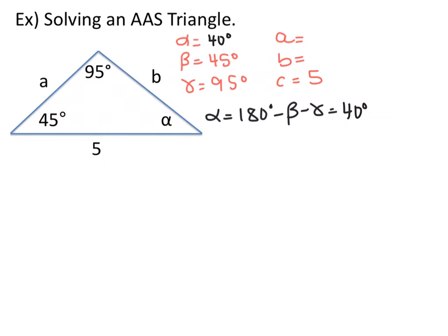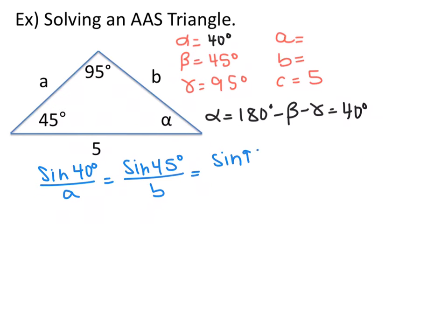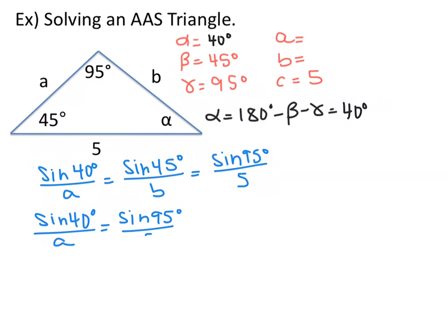Now set up the Law of Sines: sine of alpha over A equals sine of beta over B equals sine of gamma over C. We can now find sides A and B. Starting with A, take those two ratios and set them equal: sine of 40 degrees over A equals sine of 95 degrees over 5. Cross multiply and you get A equals 5 times sine of 40 degrees divided by sine of 95 degrees.